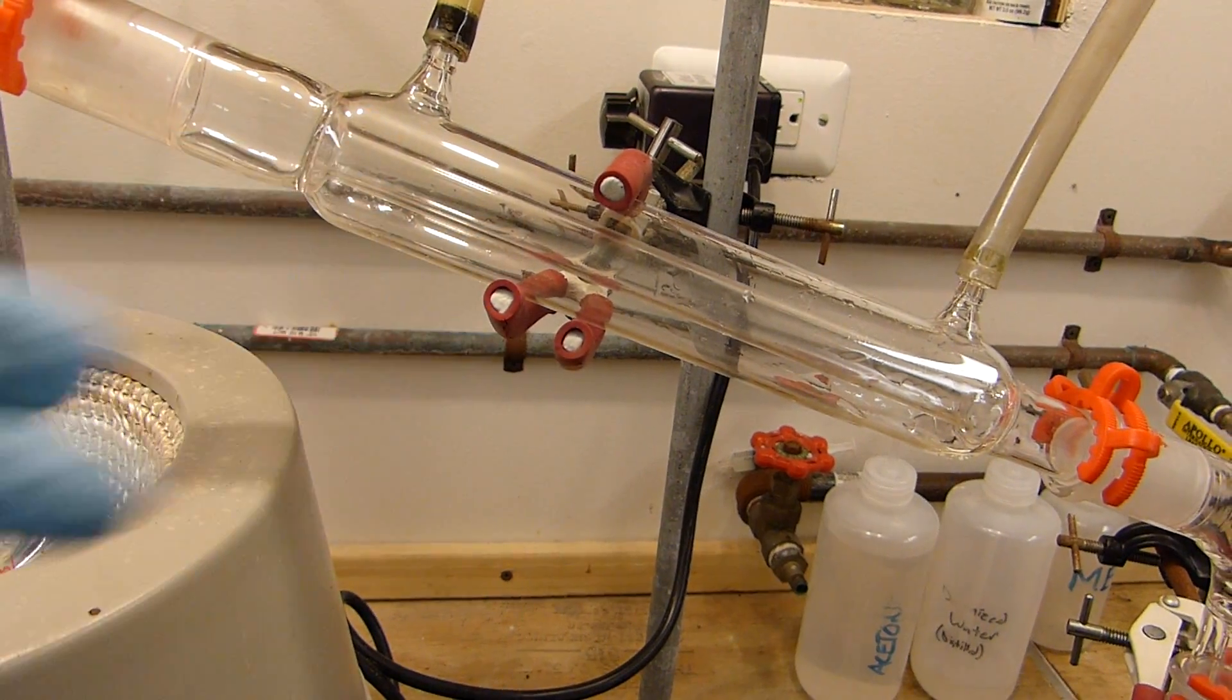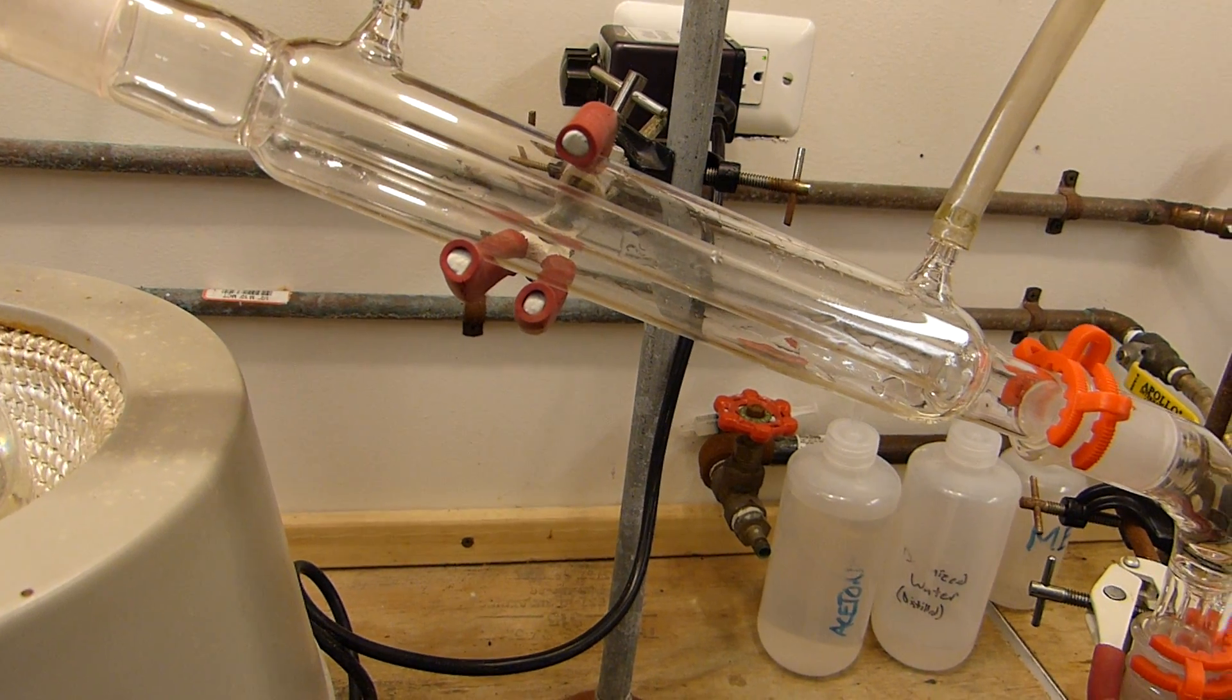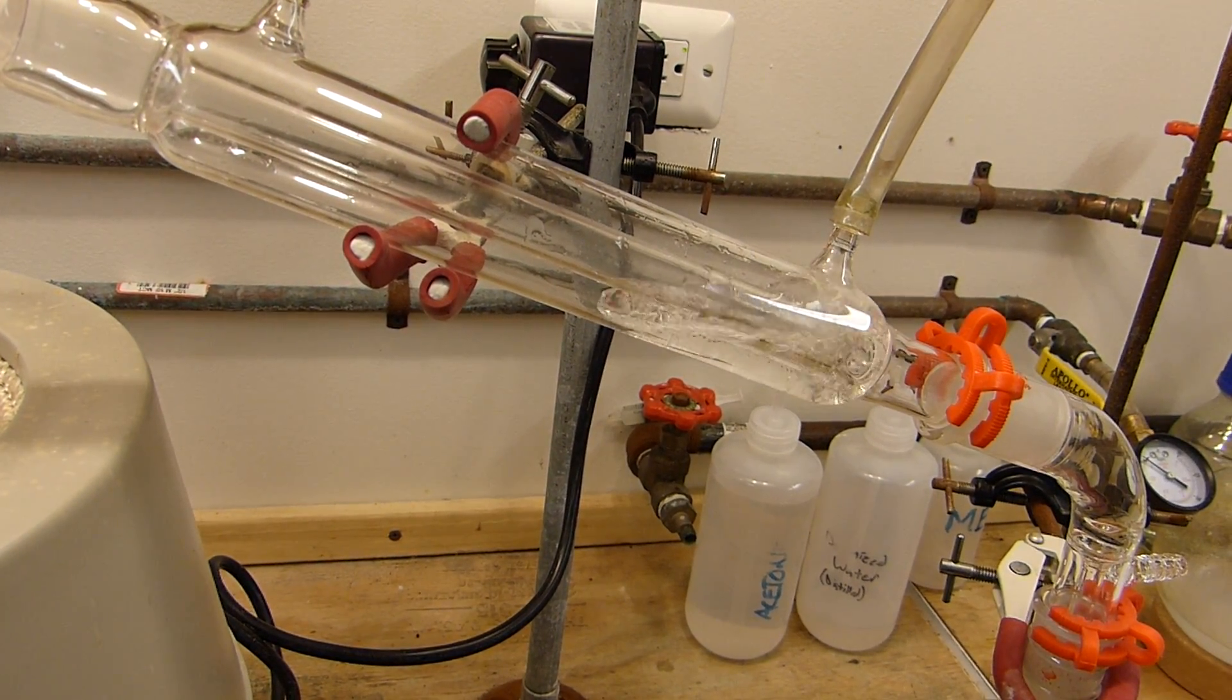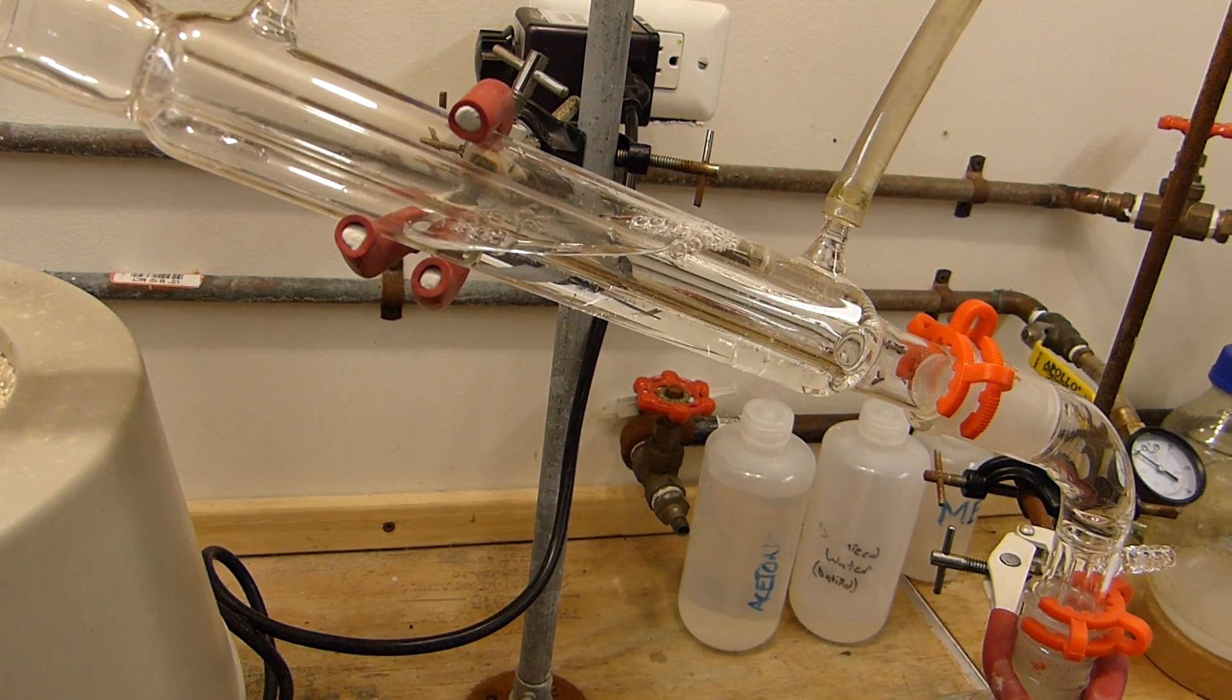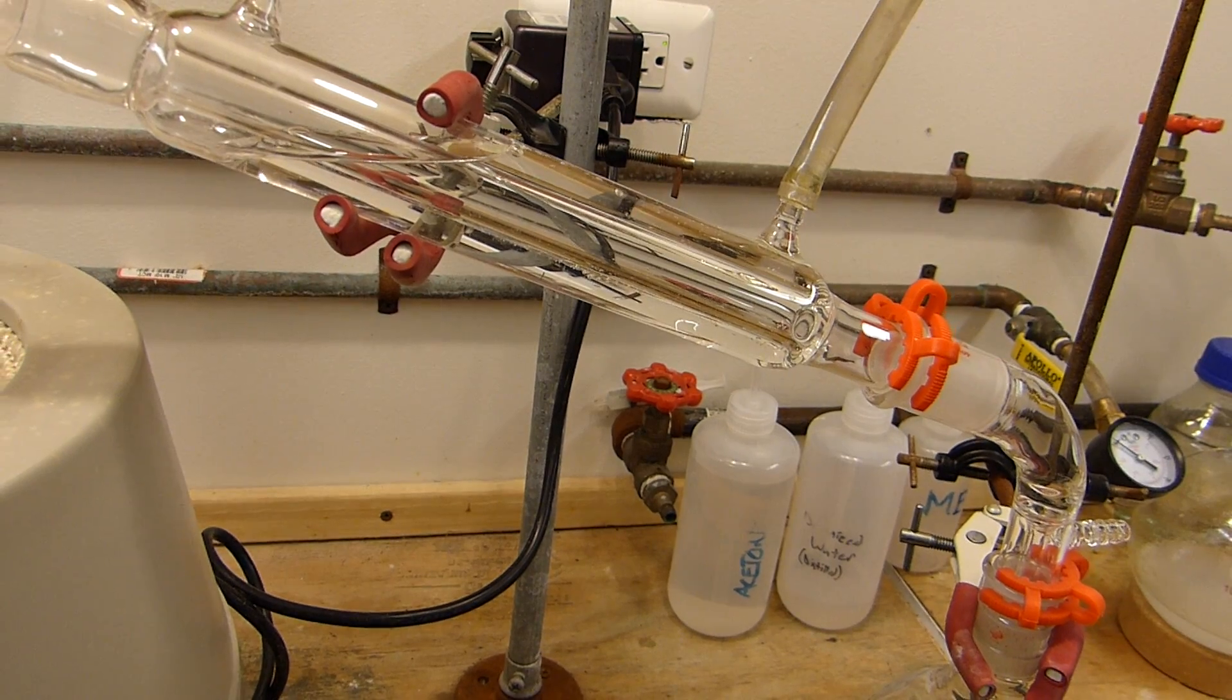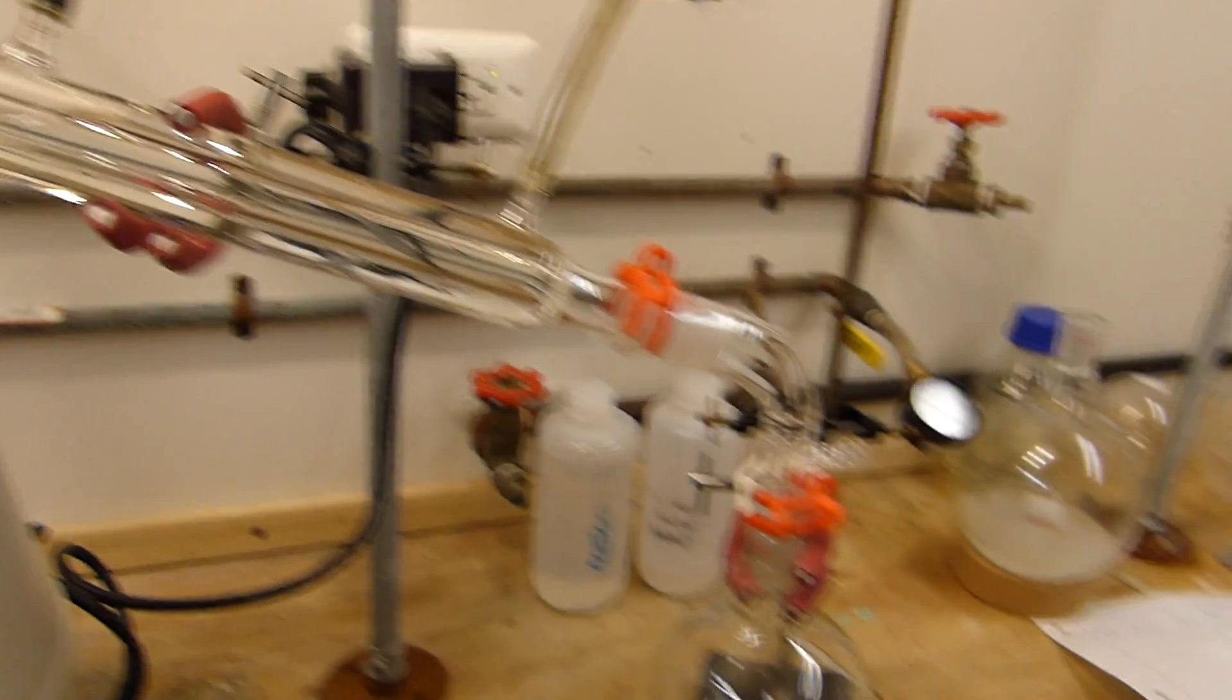I've got a 300 millimeter Liebig condenser here, or I'm sorry that's actually a 200 millimeter Liebig, and I'm going to go ahead and turn the water onto that right now. Adjust the flow rate. That should be good. It's a fairly high boiling point chemical so it doesn't really take too much water flow to fully condense.